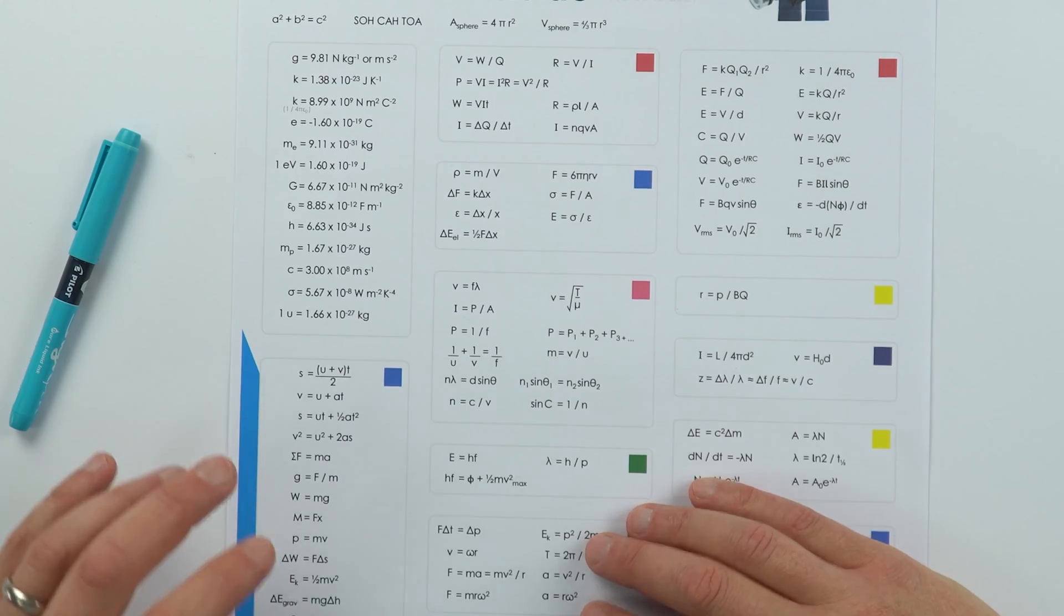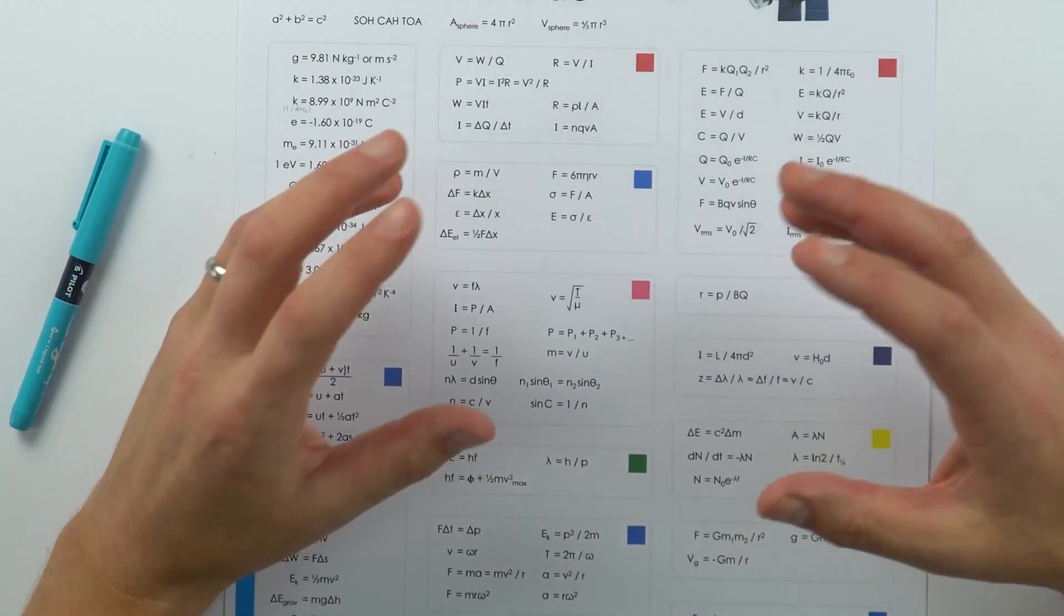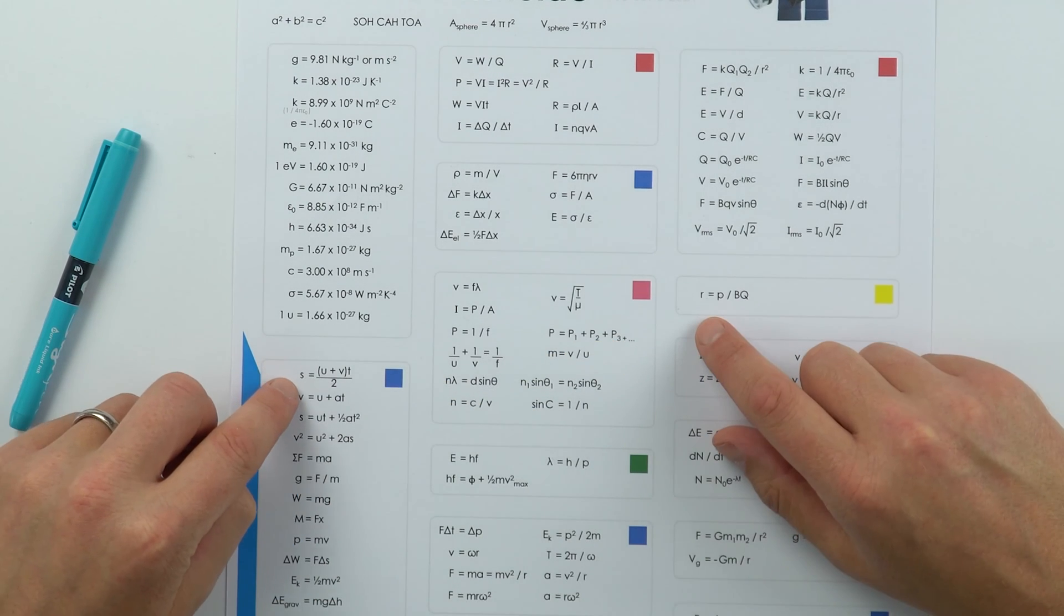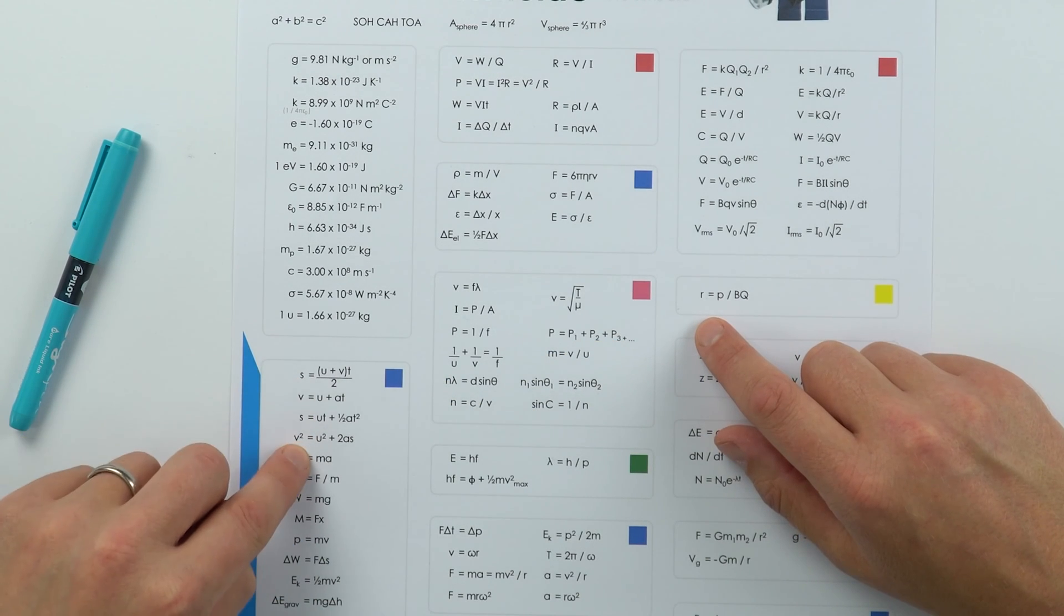For the other parts of it here, I've got things ordered by the kind of topic that they come up in. So blue is to do with forces and motion. So you can see here, we've got some of our SUVAT equations of motion up here.